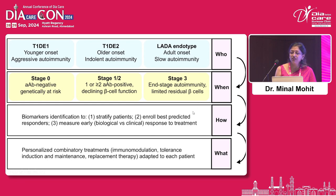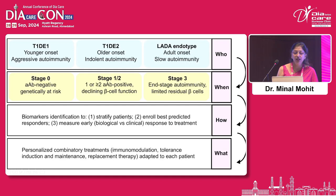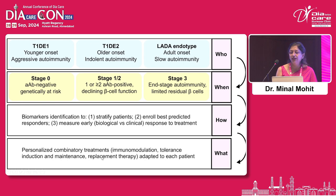So this is the endotype variability. Why do we need to know this? Because we need to intervene. We can personalize the treatment by immunomodulation, immune tolerance, and replacement therapies — all these things can be personalized.